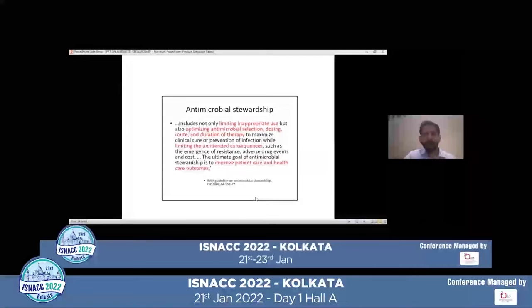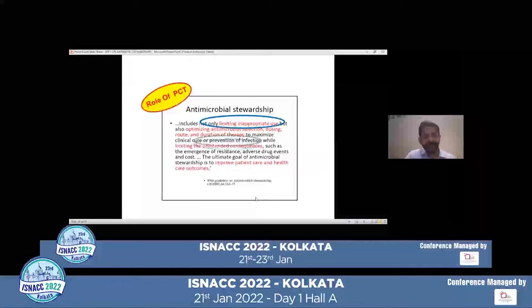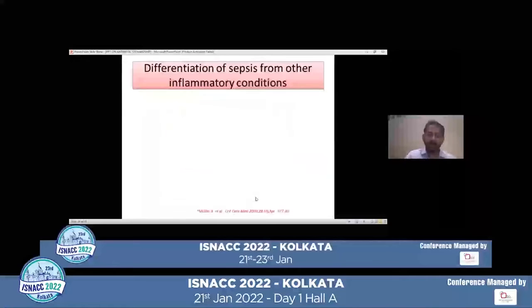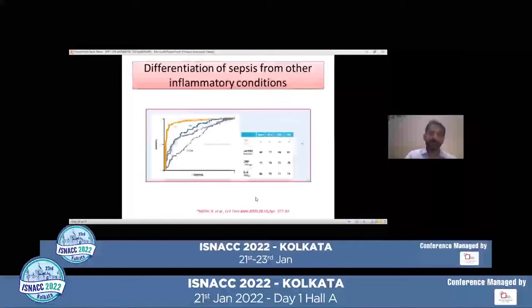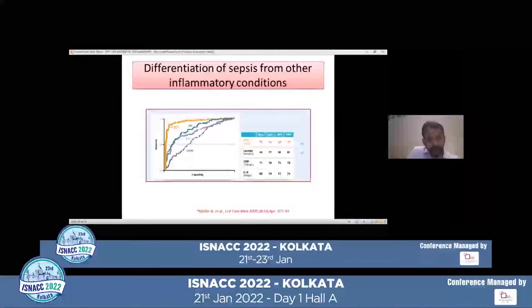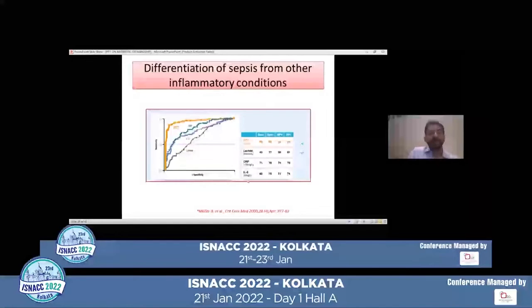Where does procalcitonin sit in antibiotic stewardship? It has come in handy for limiting inappropriate uses of antibiotics and selecting the right duration of therapy. Looking at the role of procalcitonin specifically in conditions like sepsis — comparing it with lactate, C-reactive protein, and interleukin-6 — procalcitonin is the first to rise and has a very high specificity of 95%, with a positive predictive value of 94%, compared to other commonly used biomarkers. The role of procalcitonin stands out compared to the other biomarkers.